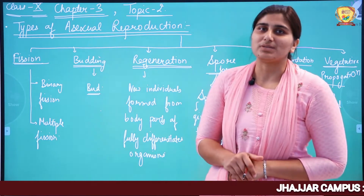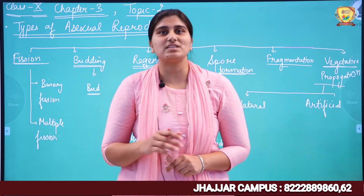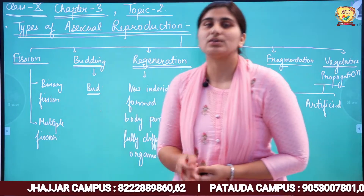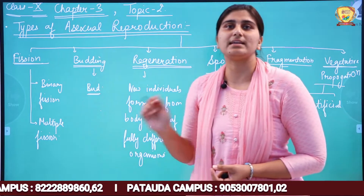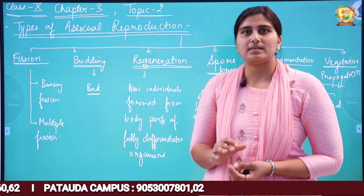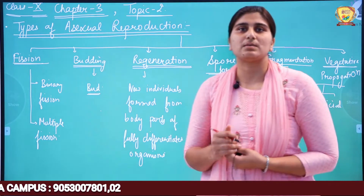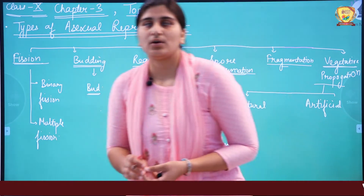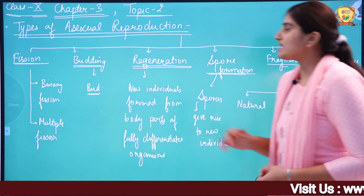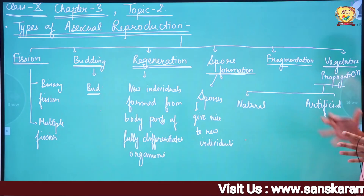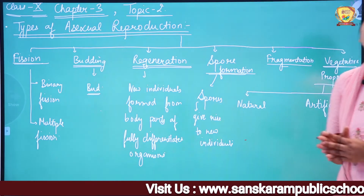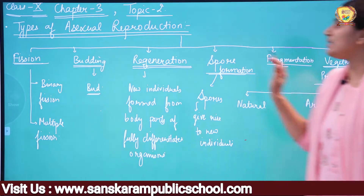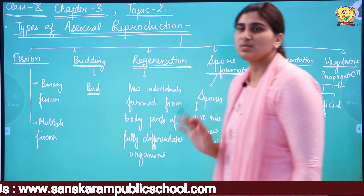My dear students, in our last class we started Chapter 3 — 'How Do Organisms Reproduce?' Today we are going to take the second lecture of this topic. Last class we discussed sexual and asexual reproduction and something about variations. Today we will start the types of asexual reproduction.